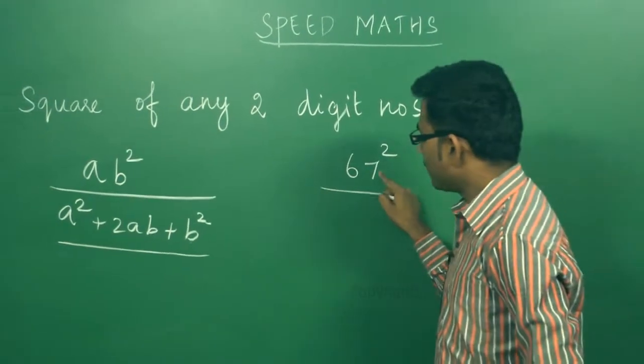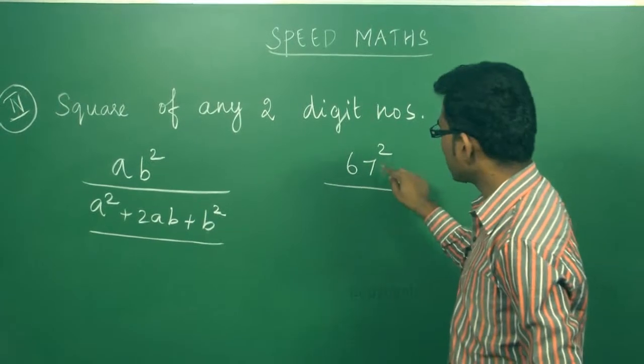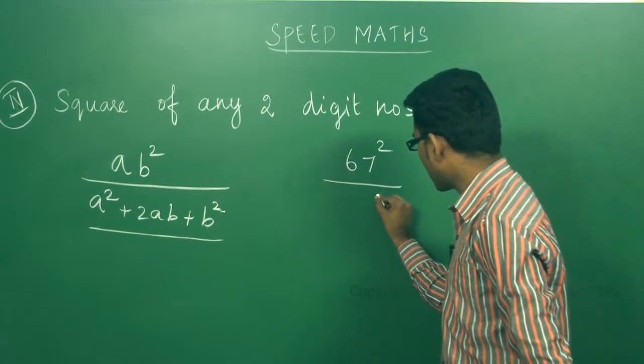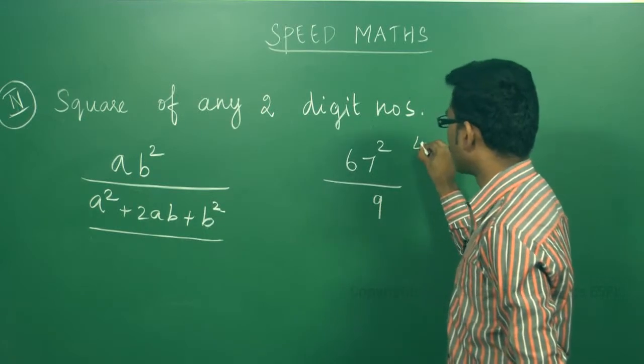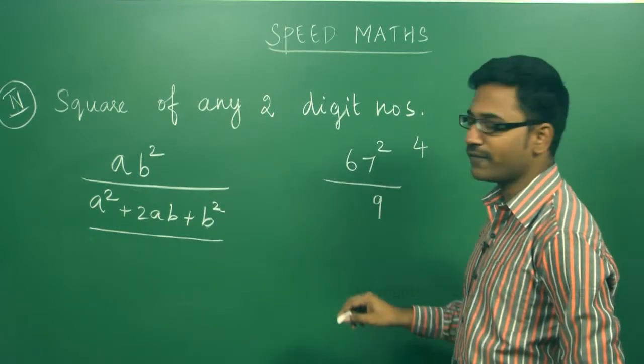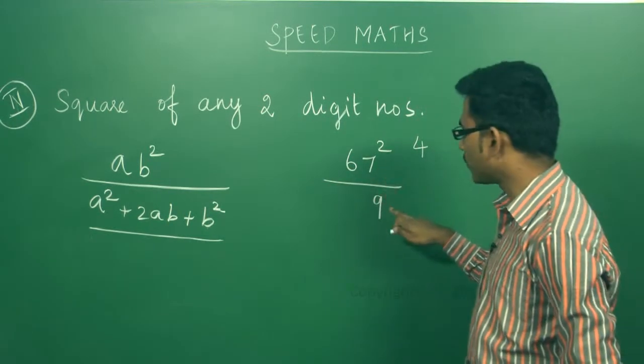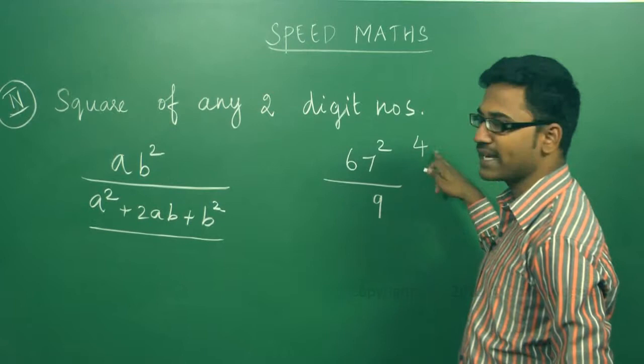The first step: I told you how to square the unit digit. 7 is the unit digit. 7 squared is 49. So we write 9 and the carry is 4. I am doing the first step, b squared. This is b equals 7. So 7 squared is 49. 9 I am putting, carry is 4.